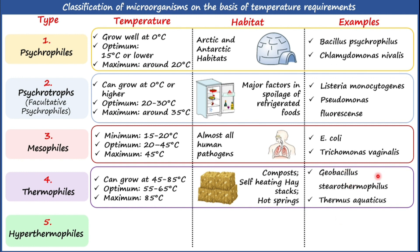Geobacillus stearothermophilus and Thermus aquaticus are very good examples of thermophilic bacteria. Geobacillus stearothermophilus spores are well known to act as a biological indicator in moist heat sterilization. Thermus aquaticus is well known as the source of Taq polymerase, which is used to carry out PCR (polymerase chain reaction) in recombinant DNA technology.